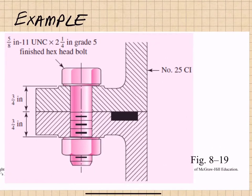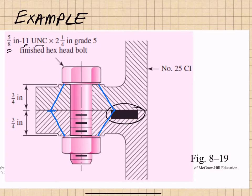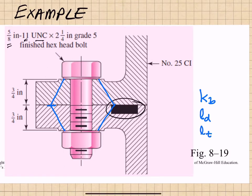In this English units example, two plates of the same material — each three-quarter inches thick — are clamped together with a gasket fitting. A 5/8-11 UNC 2¼ grade 5 bolt passes through them with no washers. The grip spans both plates, with the center at the interface. We want to find the equivalent bolt stiffness K_b, which requires the unthreaded and threaded lengths in the grip, the nominal cross-sectional area, and the threaded cross-sectional area.